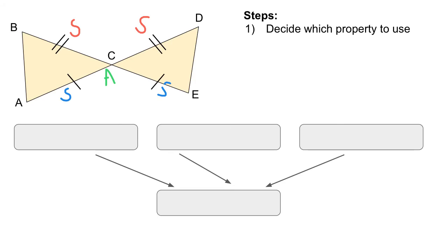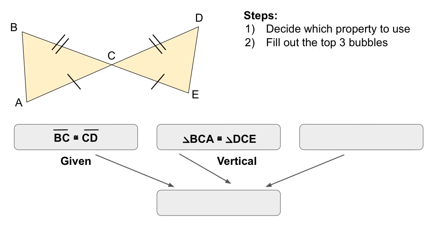Let's try to fill in the first bubble now. If we fill out the first bubble, we can see that BC is going to be congruent to CD. And that's just given. We know it's given because of the marks that we have on the picture.